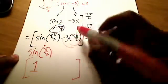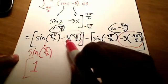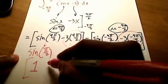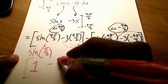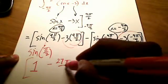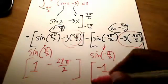What I have in this spot here, I'm just going to multiply 3 times 9, since they're both in the numerators. And I've got a negative 27π over 2.